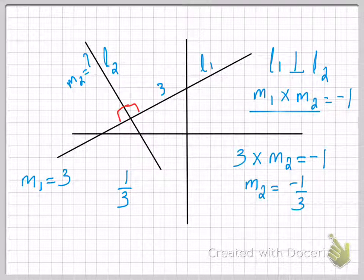Reciprocal is the process in which your numerator becomes the denominator and your denominator becomes the numerator. As I said, if two lines are perpendicular, their slopes will be negative reciprocal of each other. So the slope of M2 will be minus one over three.